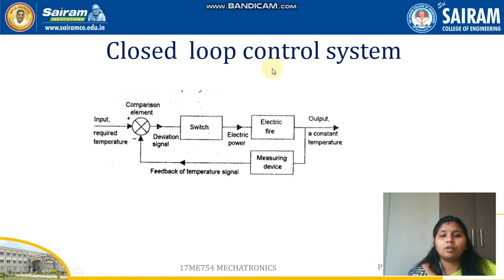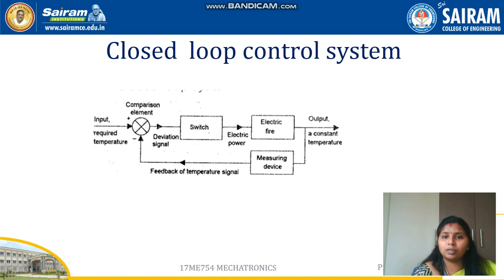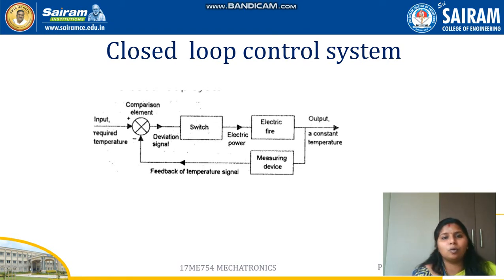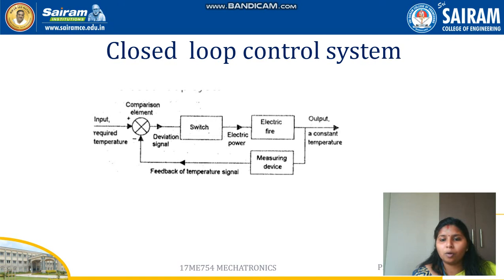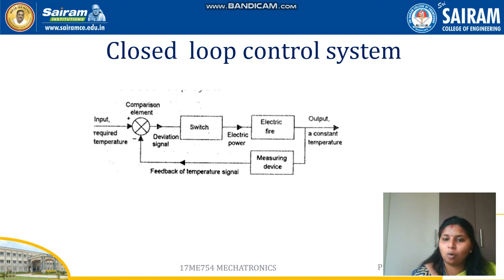The next type is the closed loop control system. In an open loop control system, we just do the work without knowing whether it is right or not. To overcome that limitation, the closed loop control system is used, where there is a comparison element along with all the components, and there will be a feedback signal.